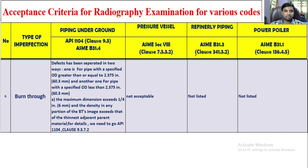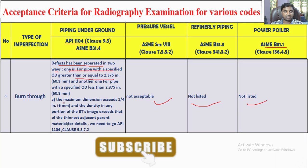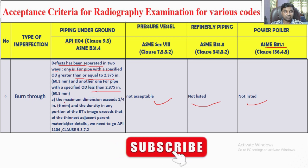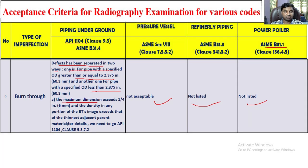Burn through: for ASME Section VIII, B31.3, and B31.1, burn through is not acceptable. For API 1104, defects are separated into two categories — pipe greater than 2.375 inch (60.3 mm) and less than 2.375 inch. The maximum density dimension exceeds 1.4 inch, and the density in any portion of the burn-through image exceeds that of the thinnest adjacent parent material. For full details, refer to API 1104 clause 9.3.7.2, options A, B, C, and D.